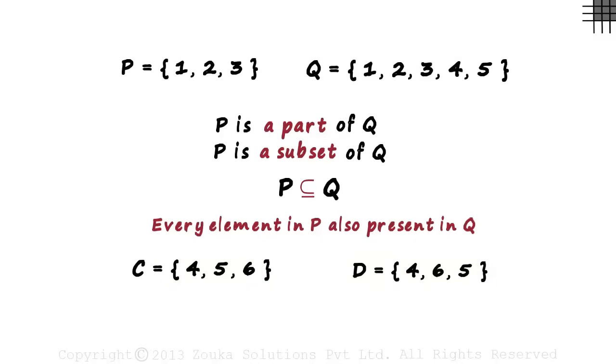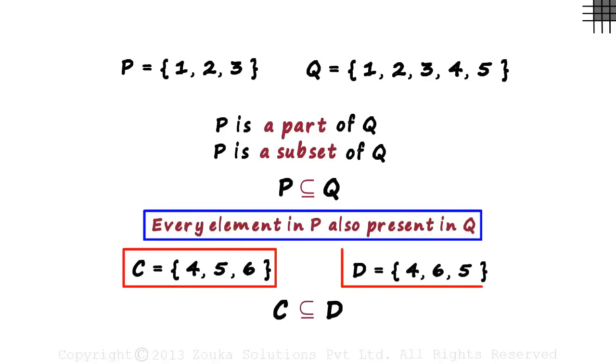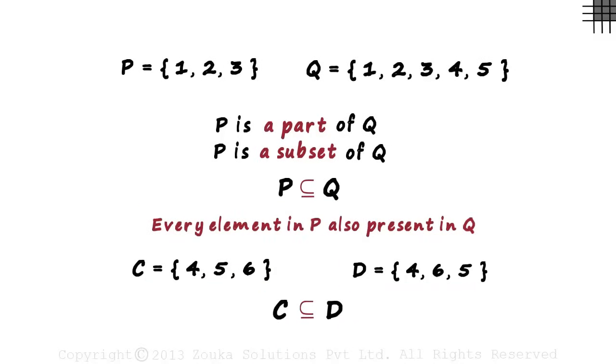But every element in set C is also present in set D. Based on the definition, we can say that set C is a subset of set D. This also tells us something more. It tells us that every set is a subset of itself. P is a subset of P, Q is a subset of Q and so on.